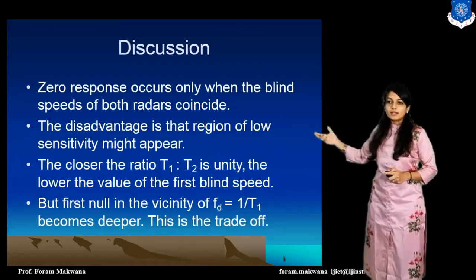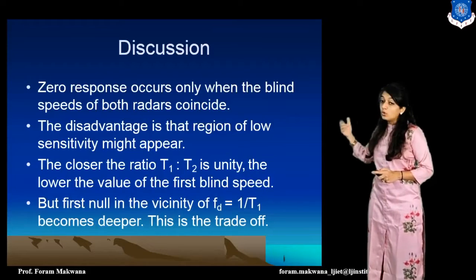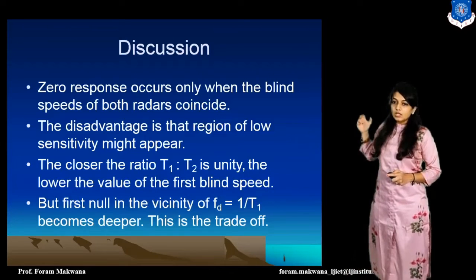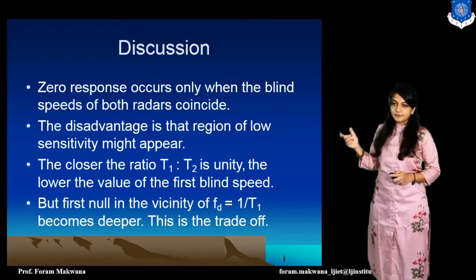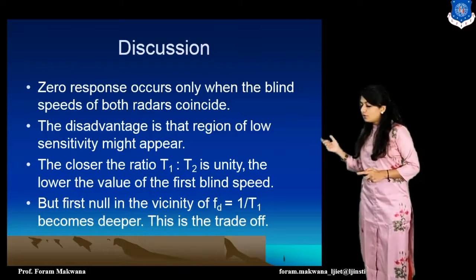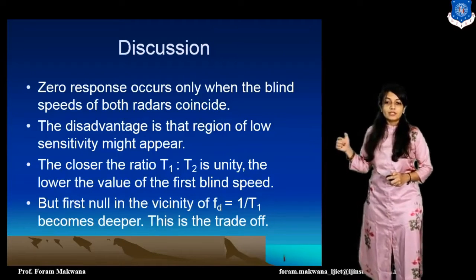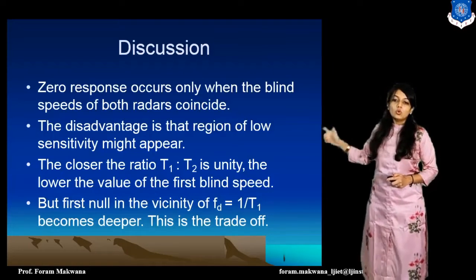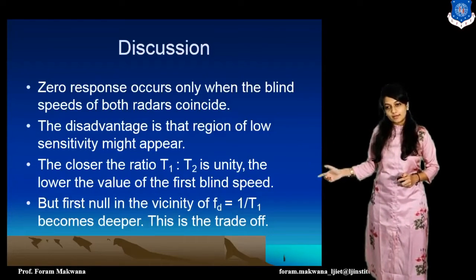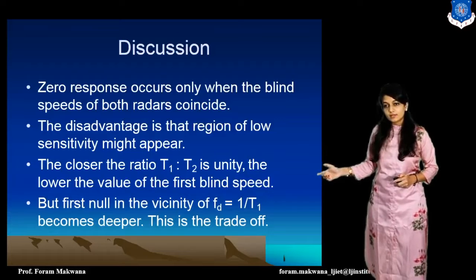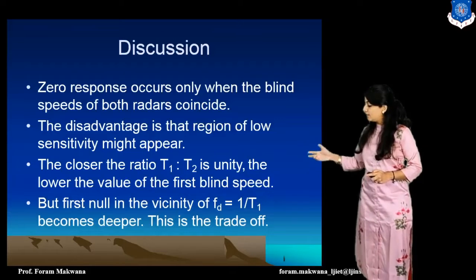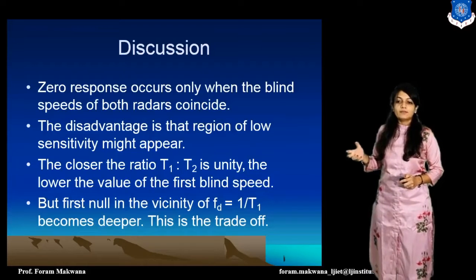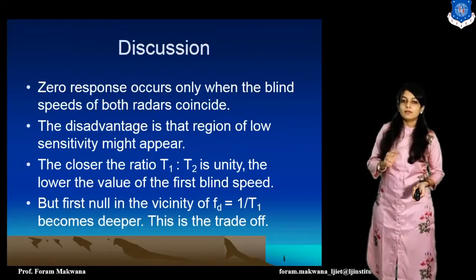The disadvantage is that there is a region of low sensitivity. Apart from that, the ratio T1 by T2, if it is equal to 1, we can lower the value of the first blind speed. Because the first null will be at a certain value and it will become deeper, so it will be a trade-off.